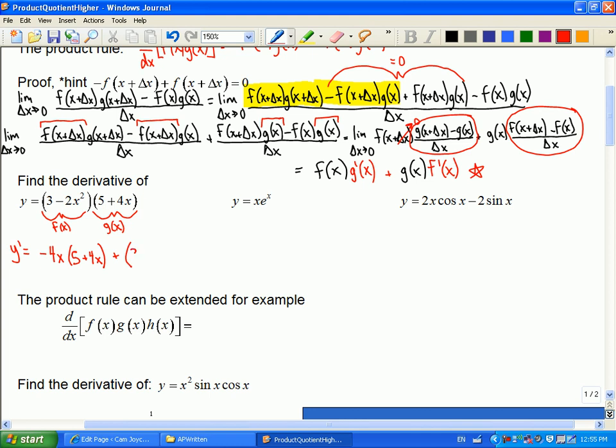Minus 4x here. And what's this one? We just leave it, 5 + 4x. It's not its turn yet. If I'm switching, it's not this first piece's turn. It's the second one's turn to be derivative. So there's its turn as derivative, and there's its turn as derivative, g prime, f prime.